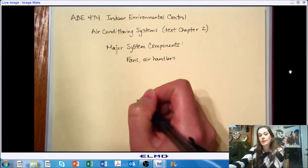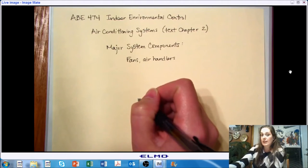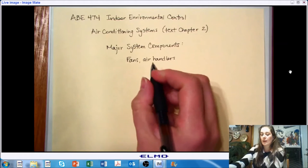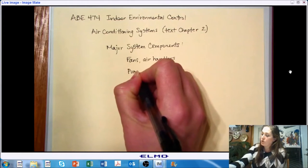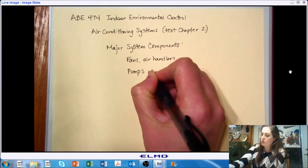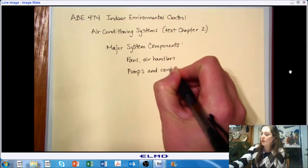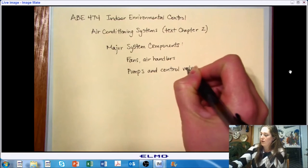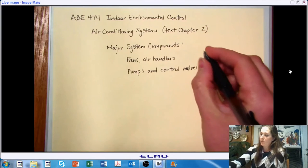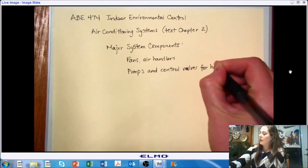We're going to need some heat exchangers in order to do heating and cooling. So we're going to need a way to control the flow and to provide the flow and control the flow of that liquid. In this case, I'm going to go ahead and write water, but it doesn't have to be water that's used in the system. That's just a very common fluid. So we need pumps and control valves for heated or chilled water.